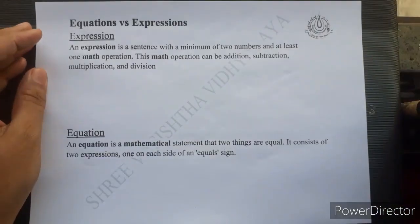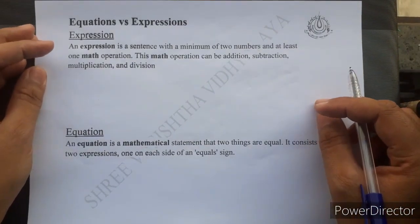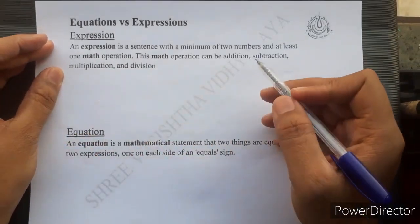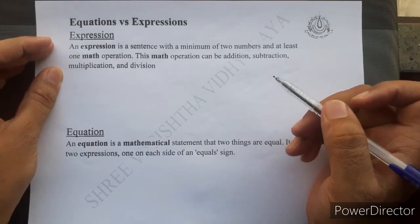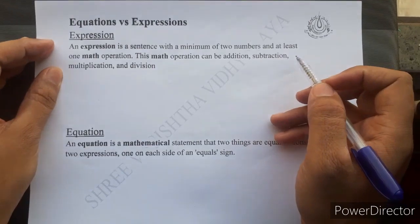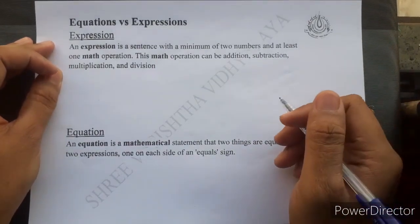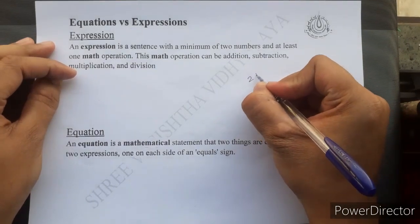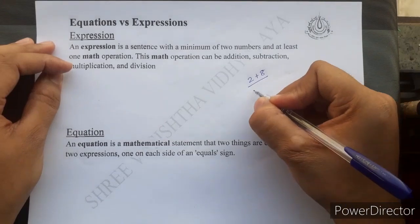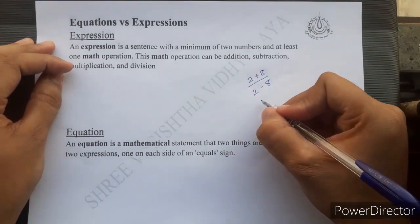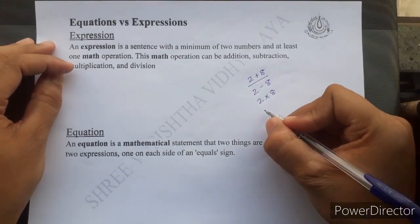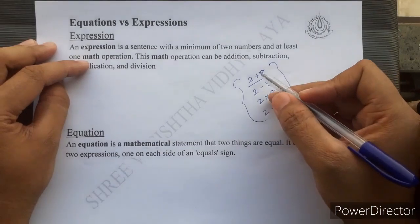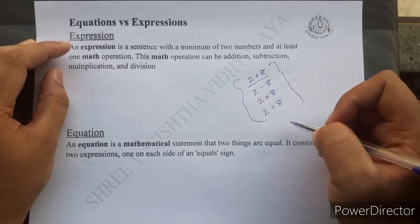Now the next topic is Equation and Expression. What is the difference between equation and expression? An expression is a sentence with a minimum of 2 numbers and at least 1 mathematical operation. This operation can be addition, subtraction, multiplication, or division. For example: 2 plus 8, 2 minus 8, 2 multiply 8, and 2 divide by 8 — these are all expressions.